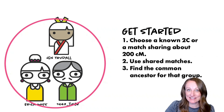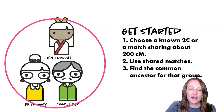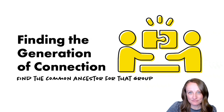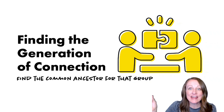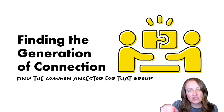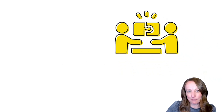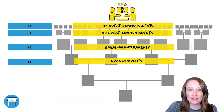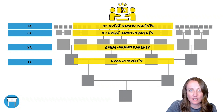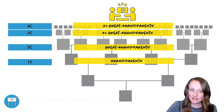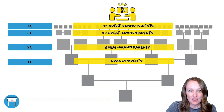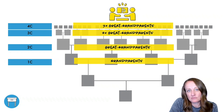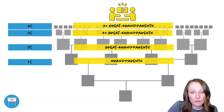Finding the common ancestor starts by identifying what I call the generation of connection — the generation in your match's chart that holds your common ancestor, the generation that connects you. For a first cousin, the generation of connection is your grandparents. For second cousins it's great-grandparents, for third cousins it's two-times-greats, and so on. The generation of connection is the place in your match's tree where you should be looking for your common ancestor.